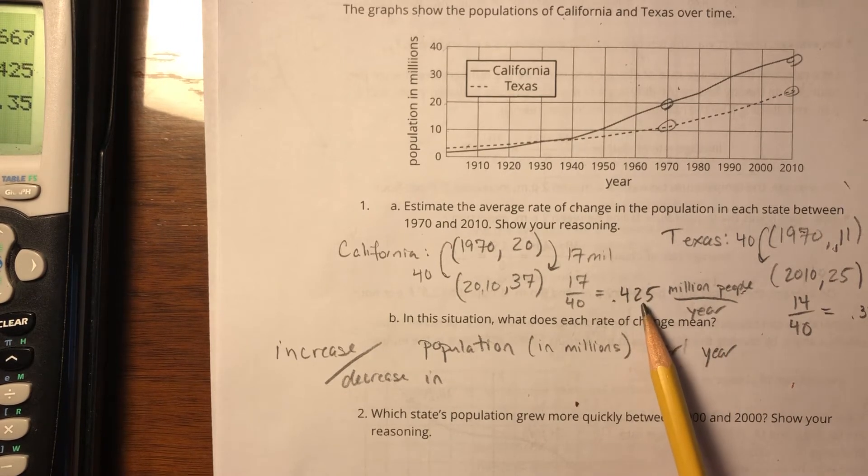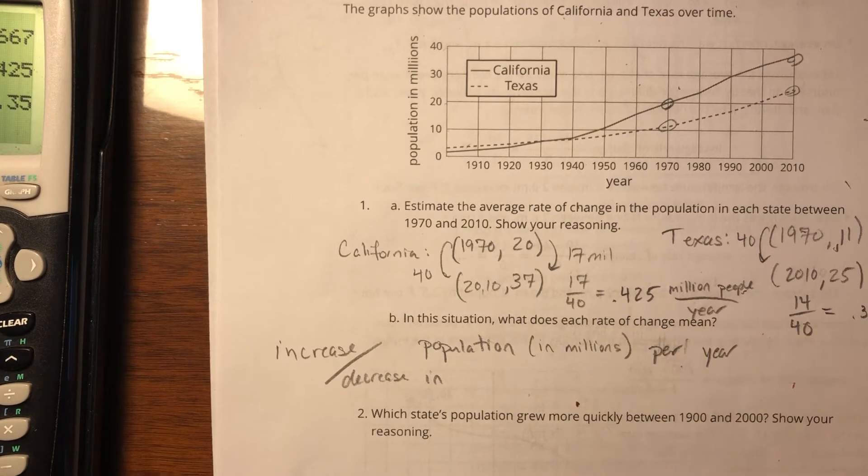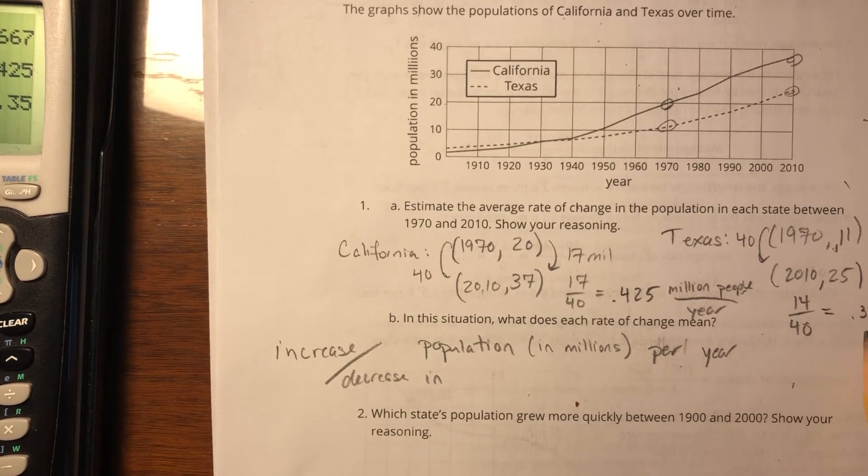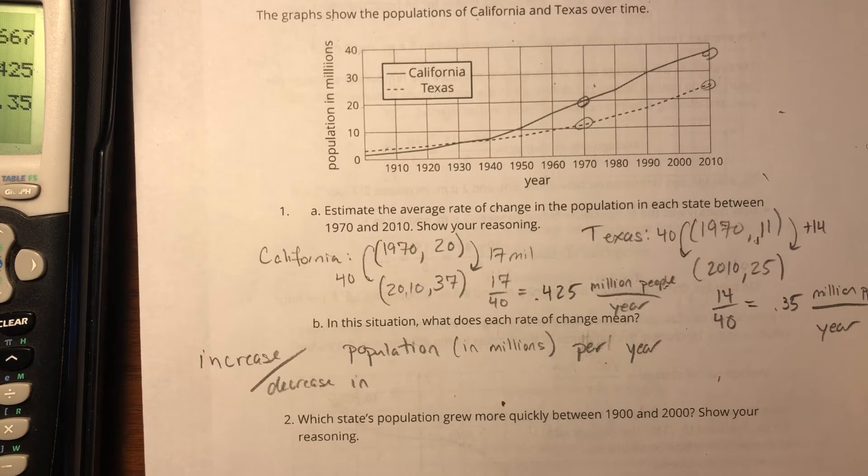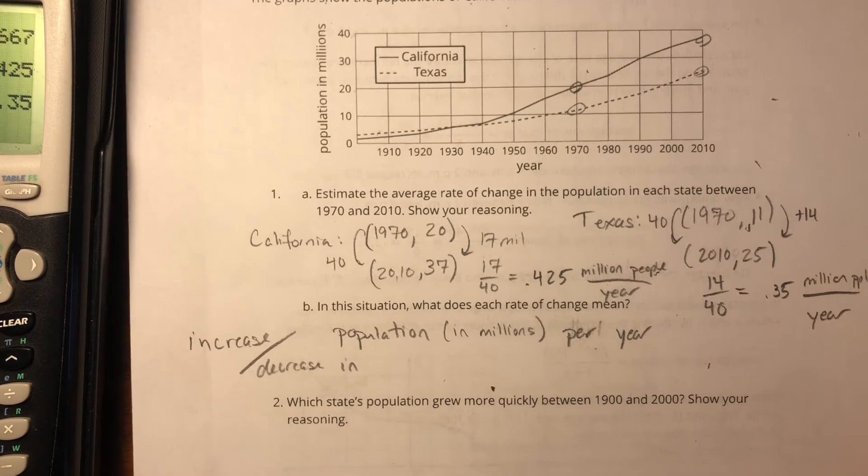we increase 0.25 million approximately. In Texas, every year on average, they increase 0.35 million people. That's what that rate of change is showing.